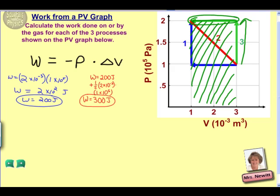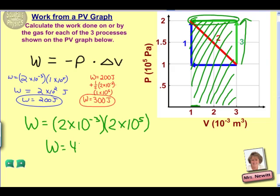Our work then would be just the area of that rectangle. The base being 2 times 10 to the negative 3rd. And the height going all the way from 0 down here up to 2 times 10 to the 5th. And if we multiply those out, we get a value of 400 joules. And again, checking our sign, we again have a decrease in volume. So a negative change in volume gives us a positive value for work.